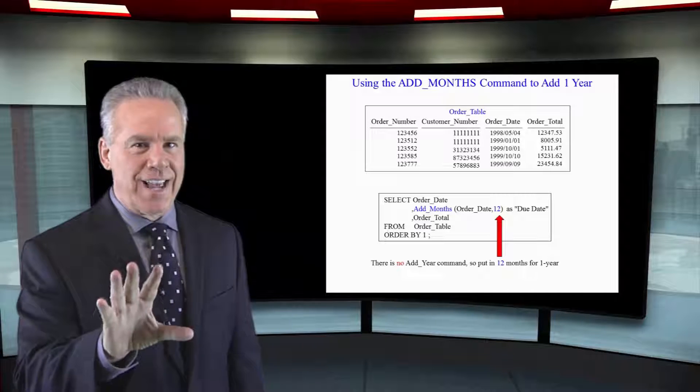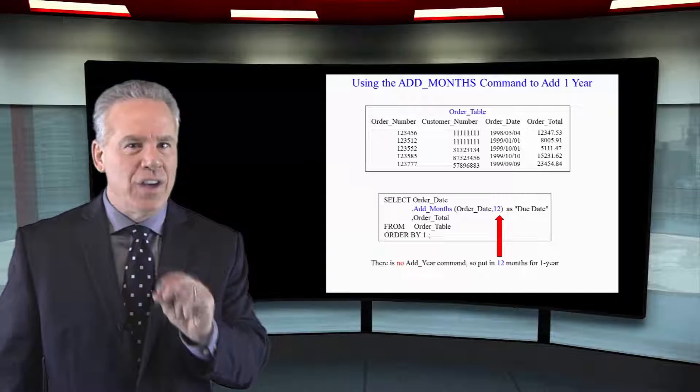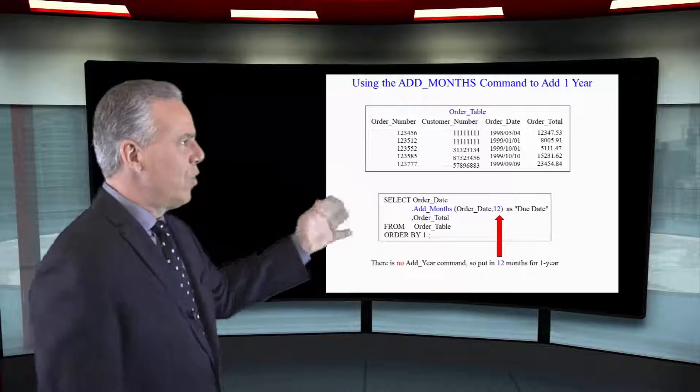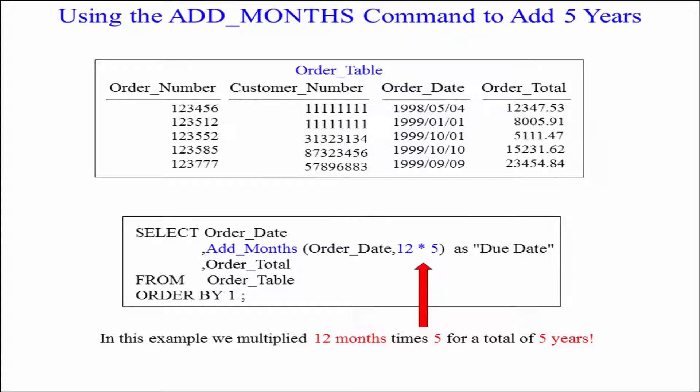So to guarantee success when you have to add five years use the add months command. Add months order date twelve times five. Works every time.